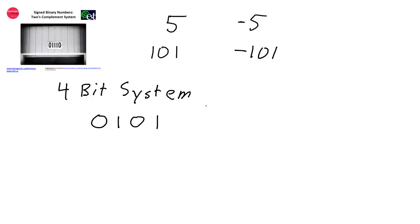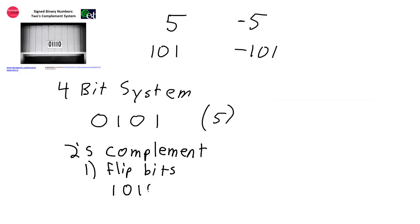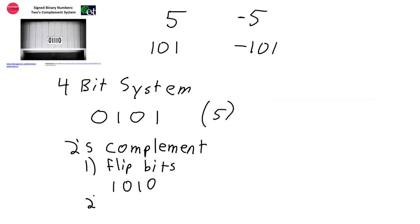Now, if we wanted to write negative 5, we would apply the 2's complement operation on positive 5 to give us negative 5. The 2's complement operation involves two steps. The first step is to flip all the bits — make any 0 a 1 and any 1 a 0. So taking 5 (0101) and flipping all the bits gives 1010. That first step is actually the 1's complement operation. The second step is to add 1, so 1010 plus 1 becomes 1011. That number, 1011, in a 4-bit 2's complement system is equal to negative 5.